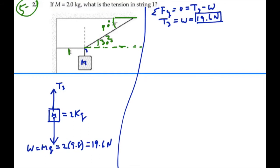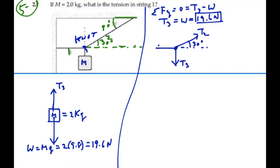Now we wish to relate that to tensions 1 and 2. We're going to focus in on the knot, and we'll notice that the knot is not moving. So we have tension 3 going down, tension 2 going off at a 30 degree angle, and tension 1 going totally in the negative x direction. We're going to break up tension 2 into two components: T2 cosine 30 degrees in the x direction, and T2 sine 30 degrees in the y direction.